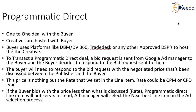In simple terms, whenever we are transacting a programmatic direct deal in Google Ad Manager, a bid request is sent to the buyer, and the buyer will respond to the bid request with a valid creative. The buyer will also need to respond to the bid request with the negotiated price discussed between the publisher and the buyer. This price is the rate set in the line item — the rate could be CPM or CPD type. For example, if the rate is $5 for 1000 impressions, the advertiser will need to pay $5 per 1000 impressions. The buyer will need to respond to the bid request with this rate.